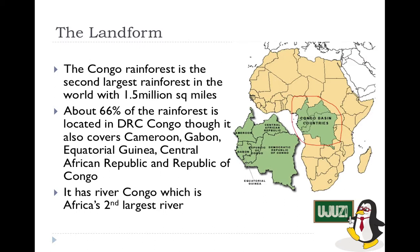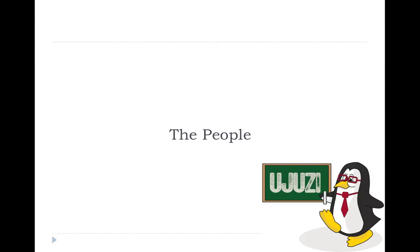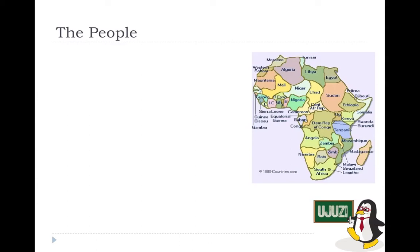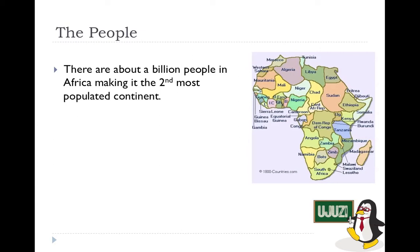Now for some interesting facts about the people of Africa. There are about one billion people in Africa, making it the second most populated continent in the world. A predominant part of the African population is young — Africa has seen enormous population growth in the last 40 years, and a large population of Africans are actually below the age of 40.